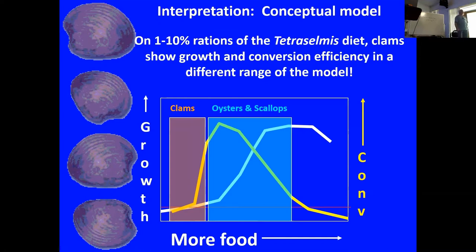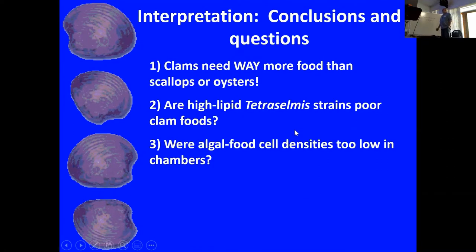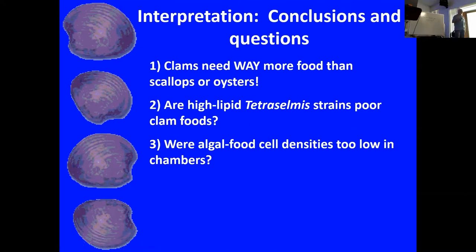That might be 100%. How do we reconcile this with other things we know about clams? It appears that clams need way more food than scallops or oysters — I'll show you some evidence that that's true. Maybe the high lipid tetraselma strains are not that great for clams. I send hundreds of cultures out every year, and clam farmers are the least likely to re-ask for high lipid tetraselma strains. Practically speaking, it seems those are not providing the kick that they do to oyster farmers.